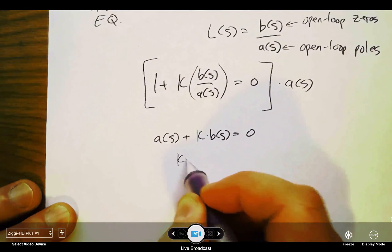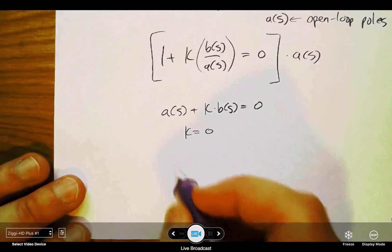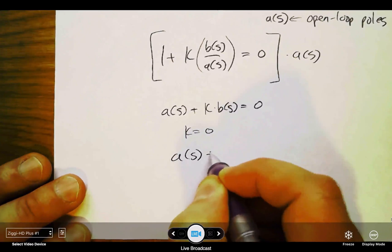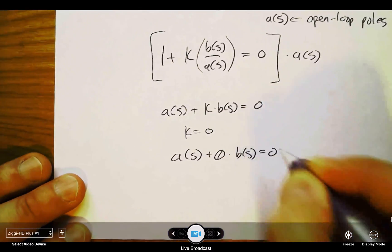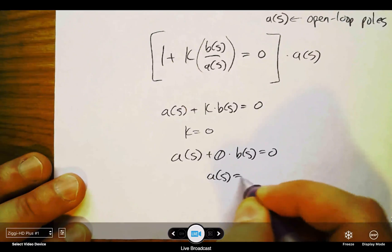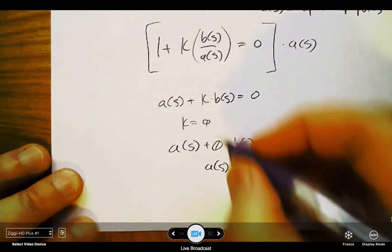Now hopefully it is obvious that if I set k equal to zero, then I'm just left with a(s) plus zero times b(s) or just a(s) equal to zero.